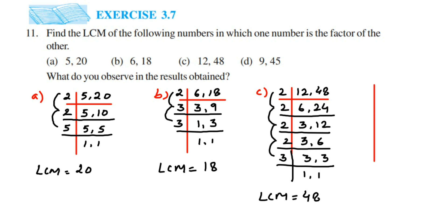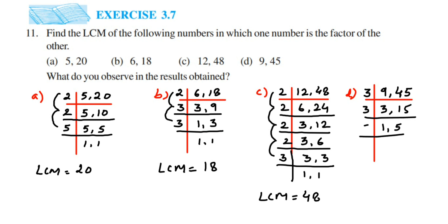The last question is 9 and 45. Neither number goes in the 2 times table, so I'm going to go with 3. 3 threes are 9 and 3 fifteens are 45. Both go in the 3 times table again: 3 ones are 3 and 3 fives are 15. Now 5 is left — 5 ones are 5. LCM: 3 × 3 × 5 = 45. So LCM is equal to 45.